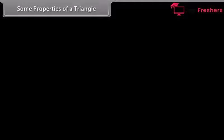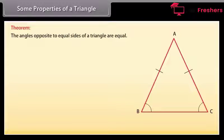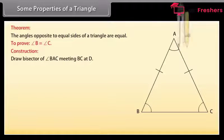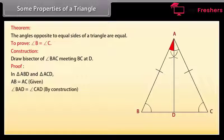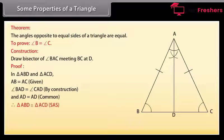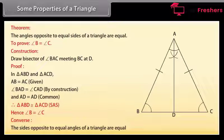Theorem: The angles opposite to equal sides of a triangle are equal. Given triangle ABC in which AB equals AC, we have to prove that angle B equals angle C. Construction: draw the bisector of angle BAC meeting BC at D. Proof: In triangle ABD and triangle ACD — AB equals AC (given), angle BAD equals angle CAD (by construction), and AD equals AD (common). Therefore by SAS rule, triangle ABD is congruent to triangle ACD, and hence angle B equals angle C. The converse is also true: the sides opposite to equal angles of a triangle are equal.